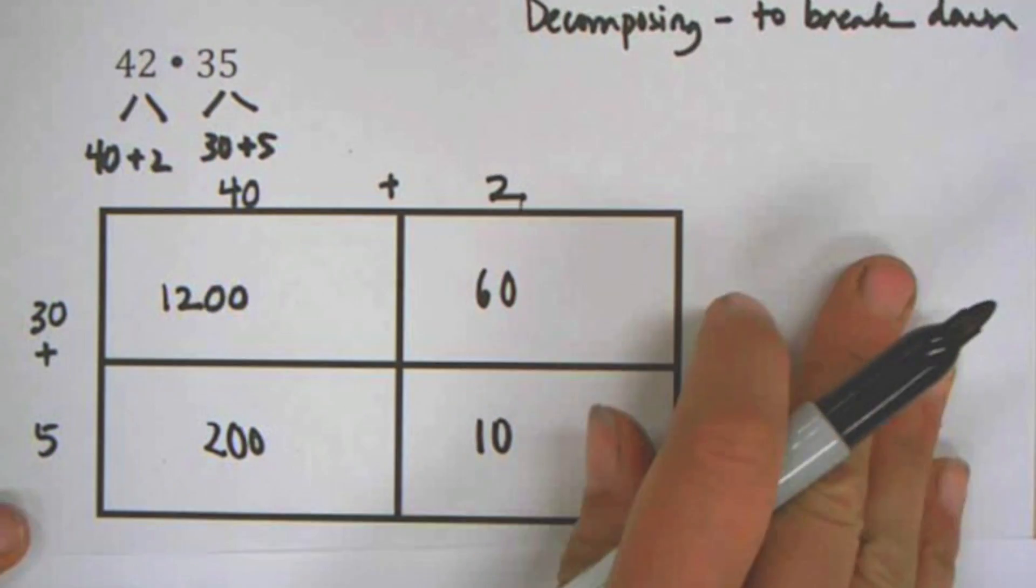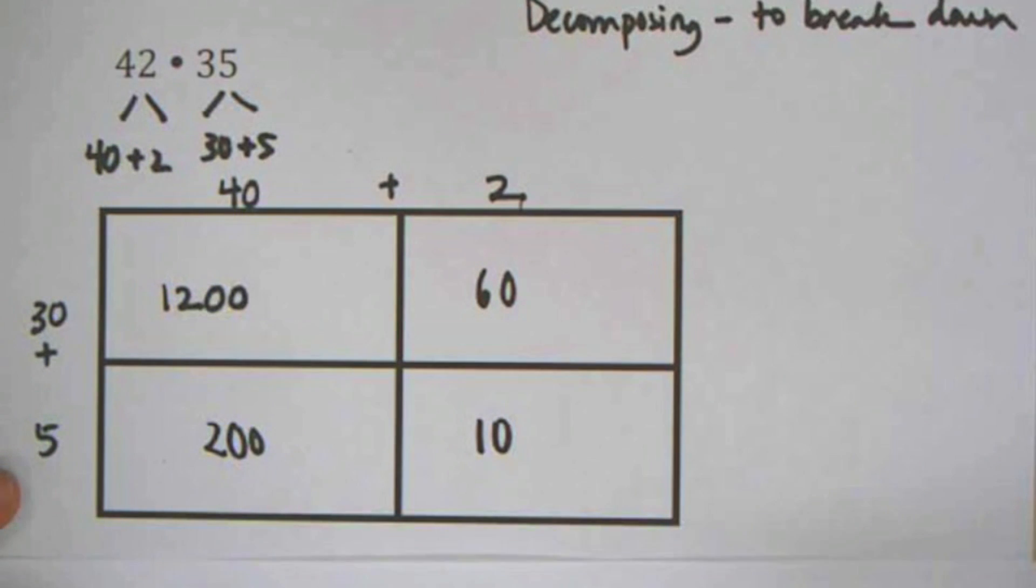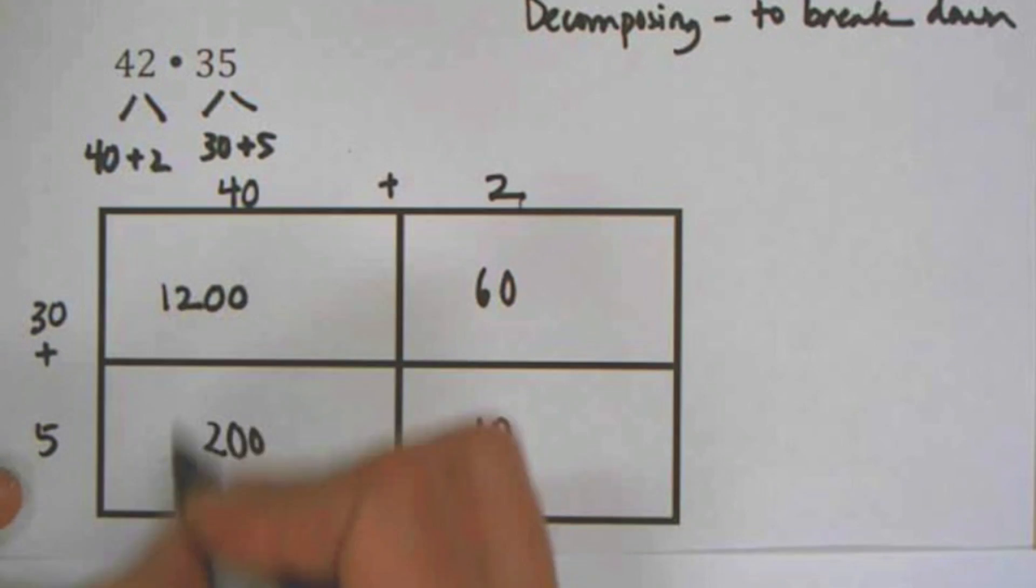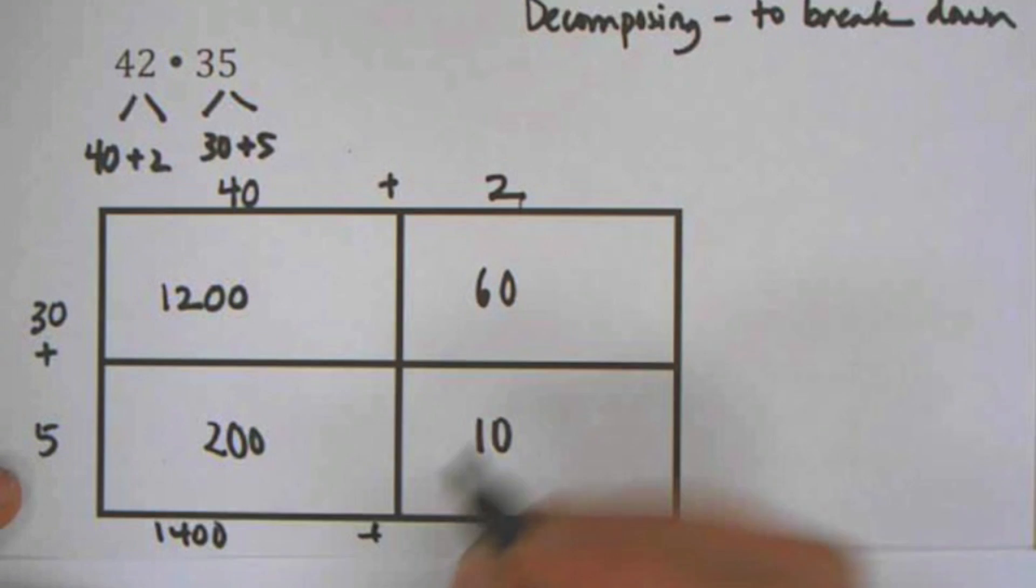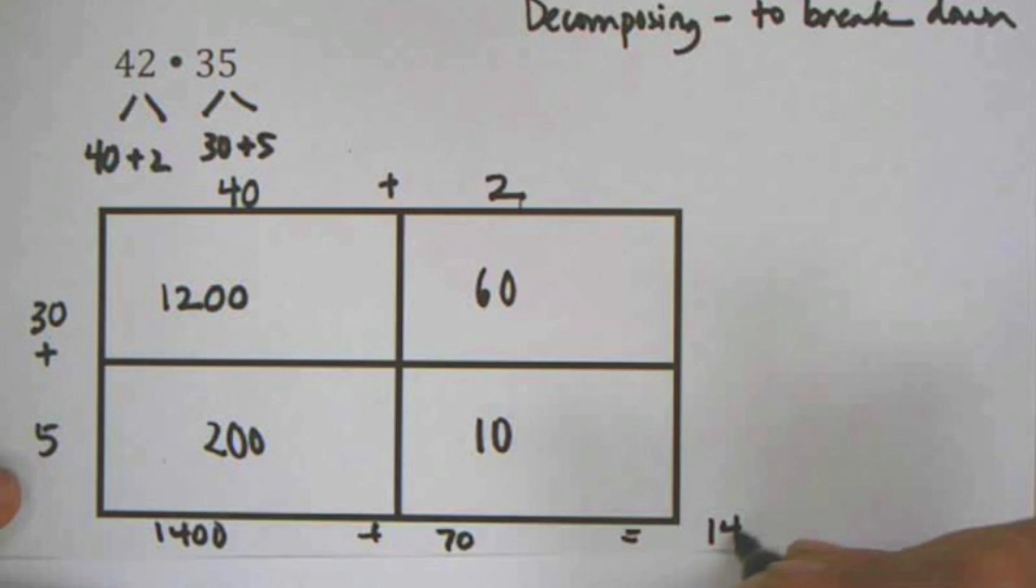And then I'm going to take my pieces and I'm going to add them up. For me, sometimes you can just kind of do some quick addition here. So I can see this is 1,400. So the 1,200 plus the 200 is 1,400 plus 70. So my final answer is 1,470.